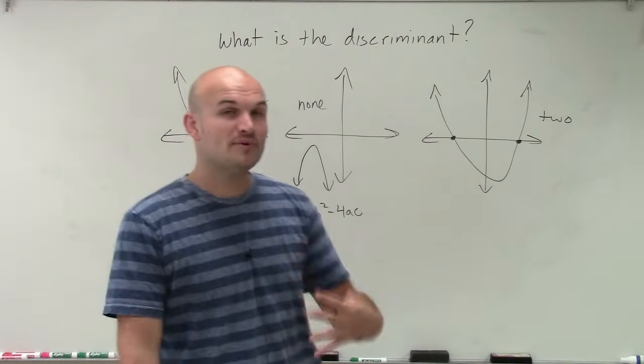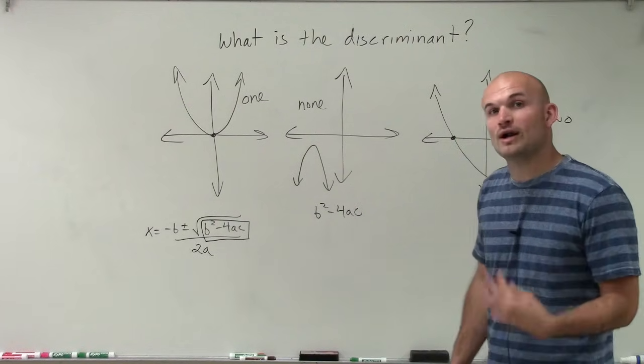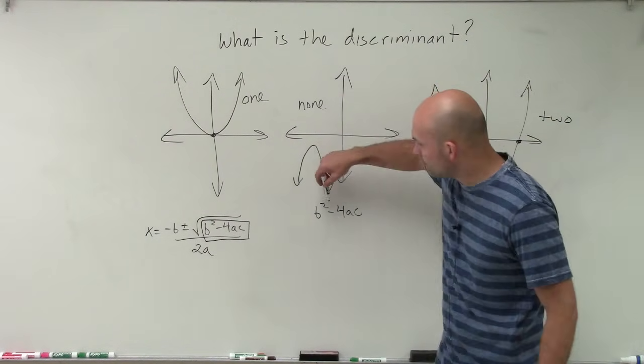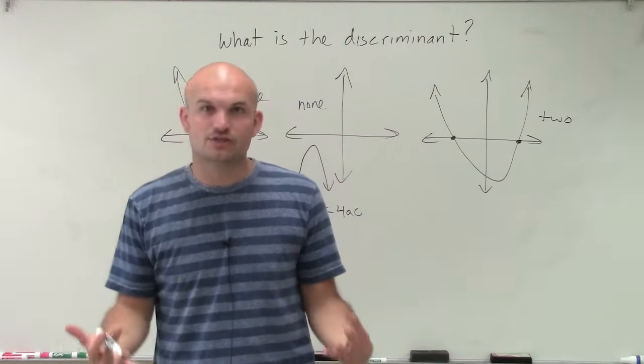And what you can see is the discriminant is what is under the square root. So there's a couple different types of solutions we're going to get determining what our discriminant is. So our discriminant is right under our square root. So now we need to think about, well, what types of numbers can we take the square root of?